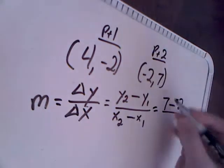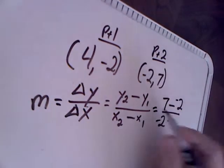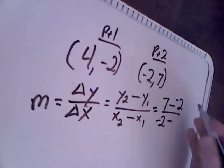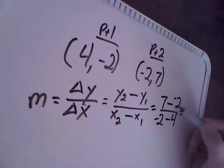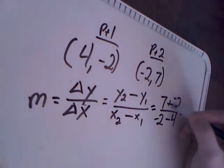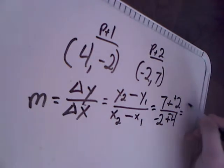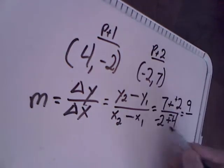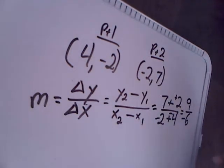Over here, the x of 2 is -2. And the x of 1 is 4, so I have -2 minus 4. Now I have to remember my add the opposite rules here to help me out, so I'm just going to switch this real quick. 7 plus 2 is 9, -2 plus -4 is going to be -6.